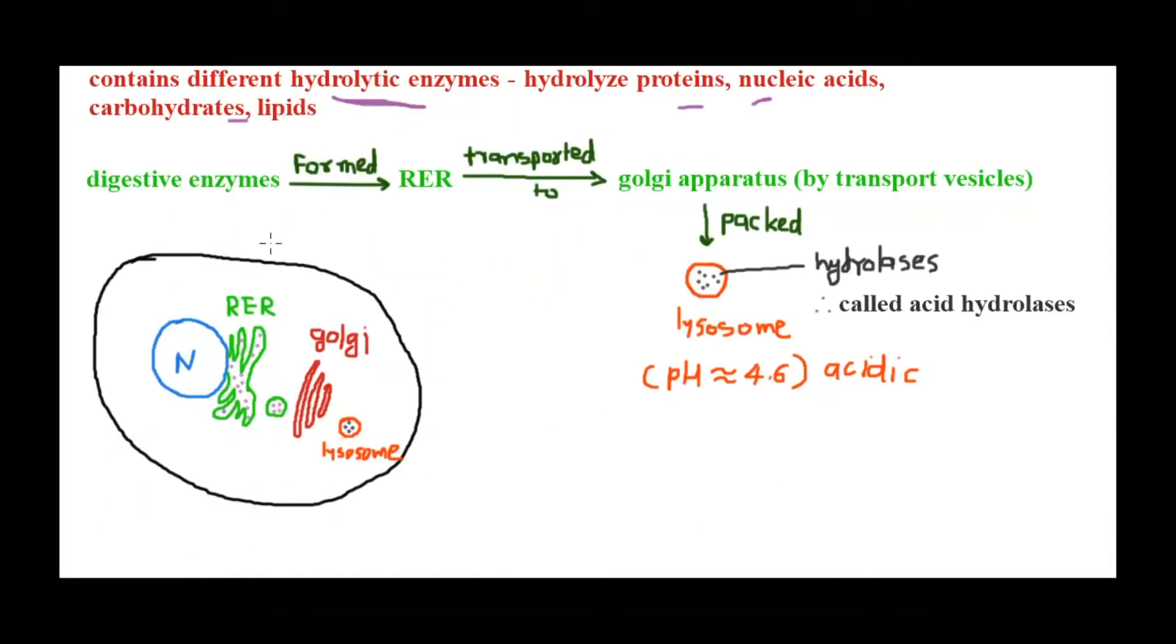You know enzymes are made up of protein, and where does protein synthesis occur in eukaryotes? In the rough endoplasmic reticulum where the ribosomes are present. So these digestive enzymes are formed in the rough endoplasmic reticulum. Once these proteins are formed, the enzymes will be transported to the Golgi apparatus for packaging by transport vesicles.